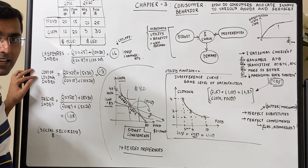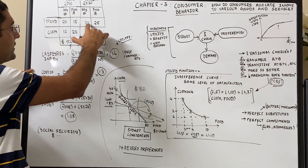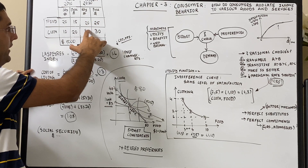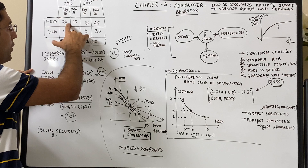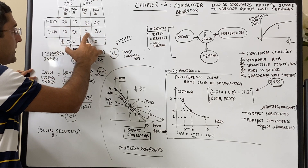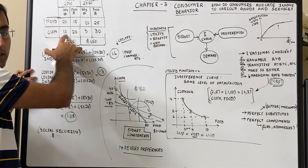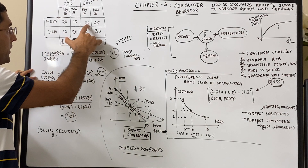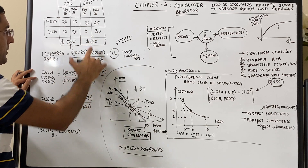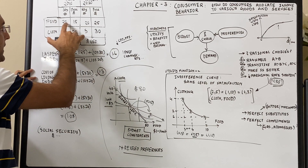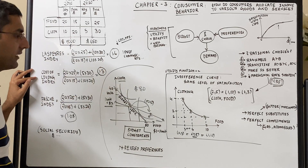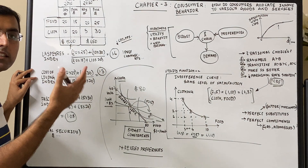The cost of living index, on the other hand, uses current year quantities at current year prices versus current year quantities at base year prices. So: (20×25 + 5×30) divided by (20×15 + 10×20). It compares what consumers are buying today at today's prices to what those same current quantities would cost at 2010 prices. That also comes out to approximately 1.3 — suggesting a 30% increase should be given in 2020.